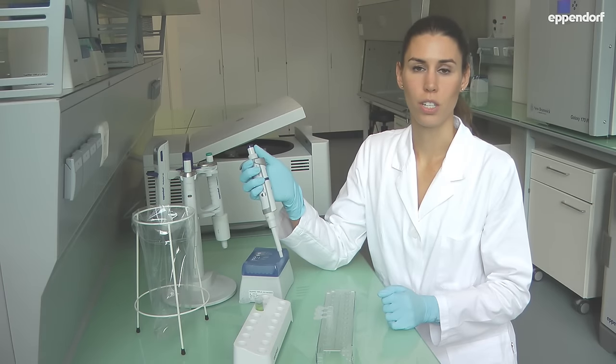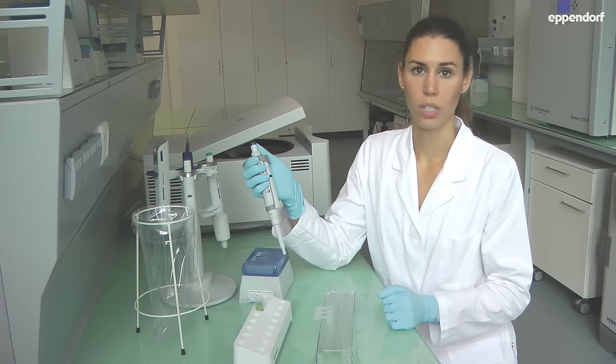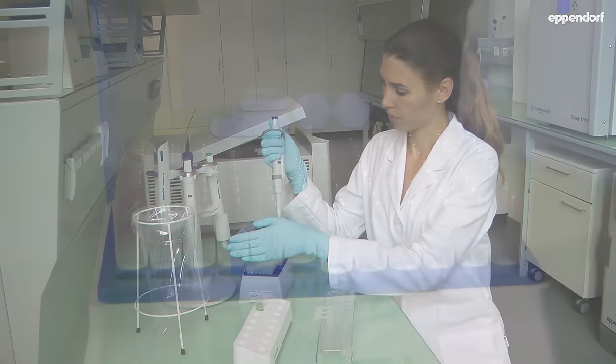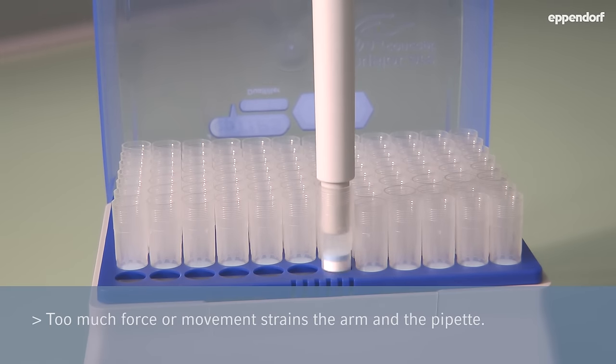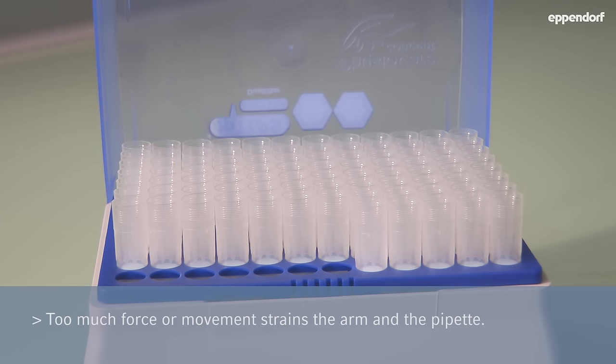Pipetting starts when you attach the tip. Apply light pressure to insert the pipet into the tip. There is no need for force or moving from side to side. This would only strain your arm and damage the pipet.